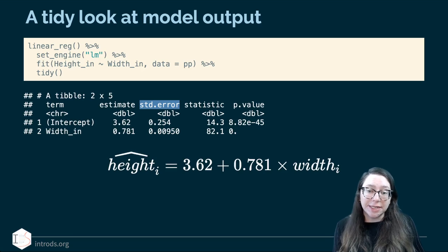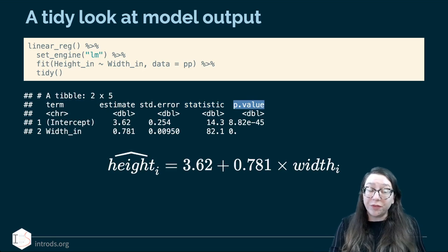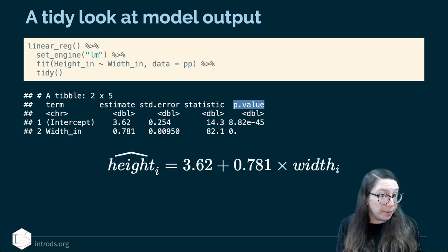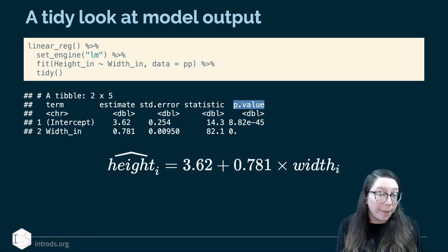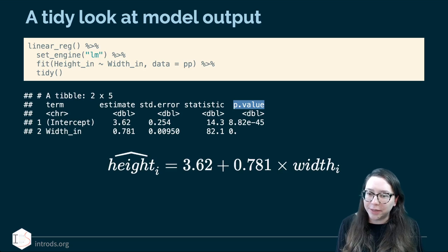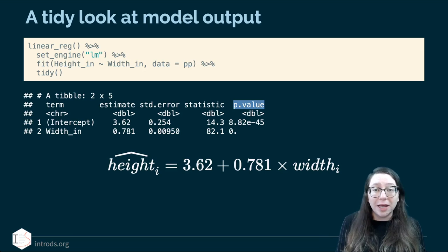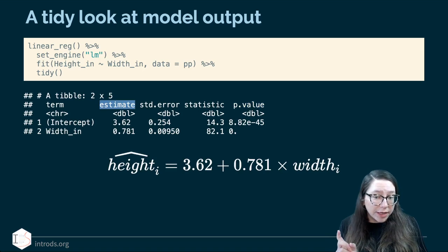Another concept in statistics is using estimates and their uncertainty to think about the significance of particular variables, which is what the test statistic and p-value are about. P-values will not be a major focus here, because we're focusing on explaining natural phenomena using models and predicting things. We will say a little about hypothesis testing and making decisions with p-values at the end of this unit. For now, we're simply going to focus on the estimate column, which gives us our intercept and slope.